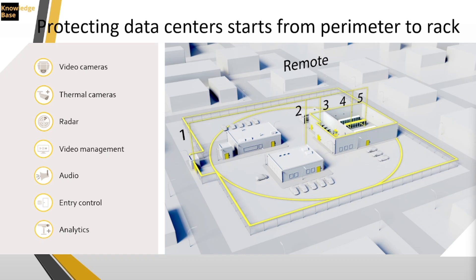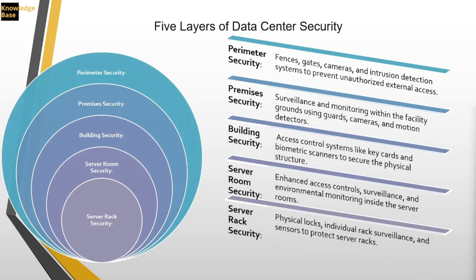When I say layers, I'm talking about five layers — starting from the perimeter to the premises, to the buildings, to the server room, and down to the rack itself.